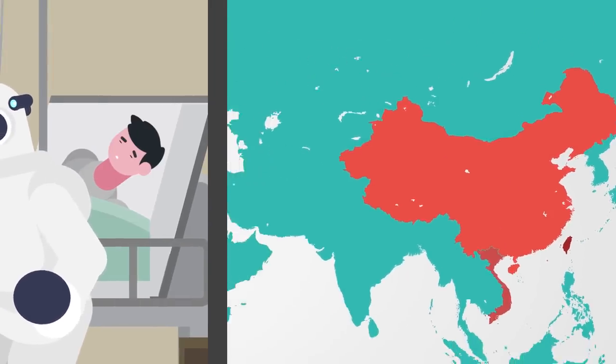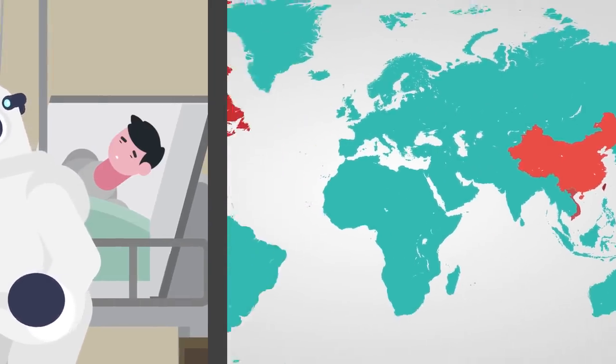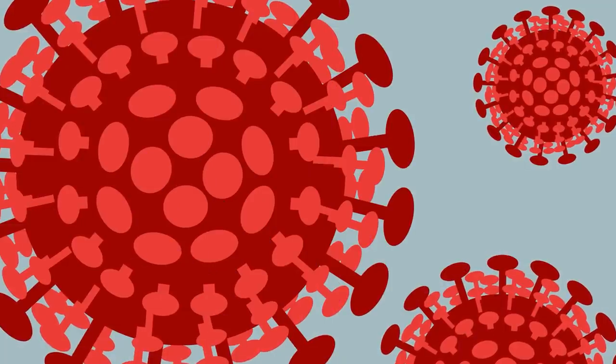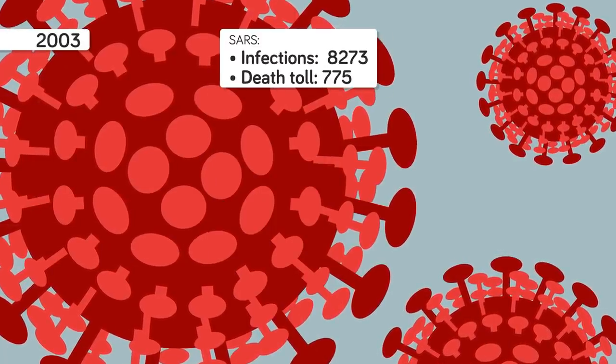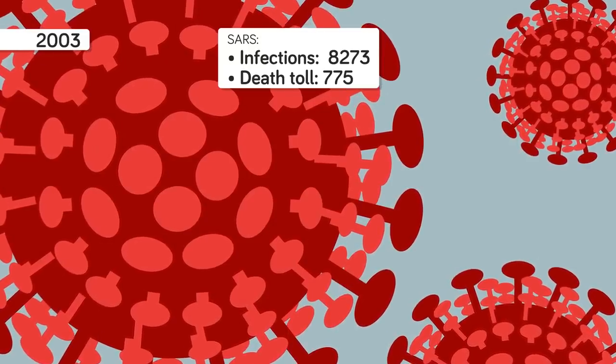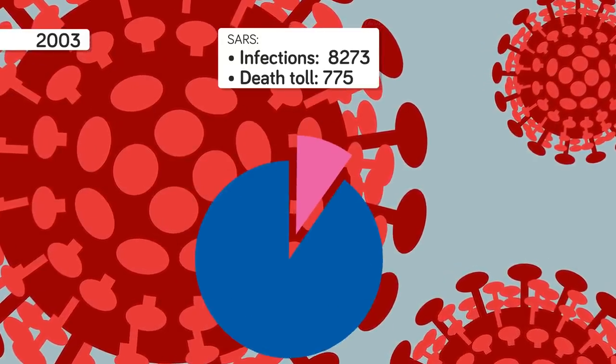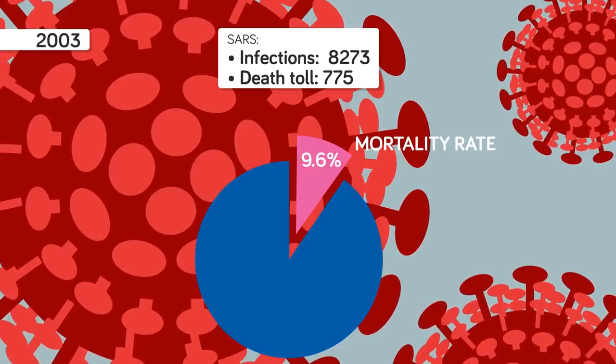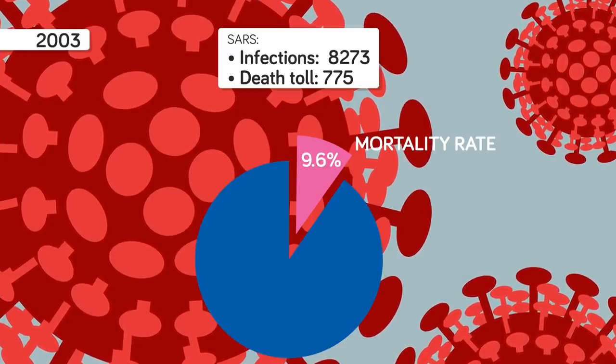As Jianlun lay dying in a Hong Kong hospital, the disease was already on its way to Vietnam, Canada, Taiwan, and beyond. Before being contained by the end of the summer of 2003, SARS would infect 8,273 people around the world, killing 775 of them, giving this disease a mortality rate of 9.6 percent, making it one of the deadliest modern epidemics.